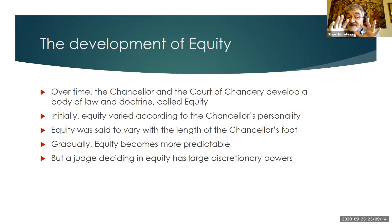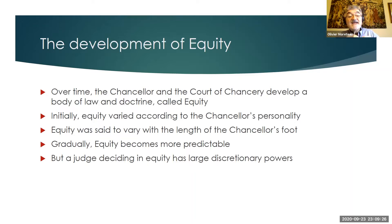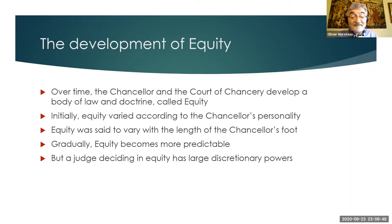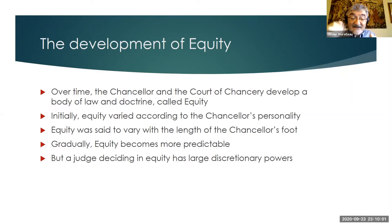The chancellor and his court developed a body of law and doctrine referred to as equity. So you start having two bodies of law: the common law on one side, administered by the royal courts, and equity administered by the chancellor and his court. Initially, equity varied according to the chancellor's personality — it was said that the equity of the chancellor varied with the length of his foot. But over time, especially after the creation of a Court of Chancery, equity became more predictable, though judges still retain large discretionary powers.